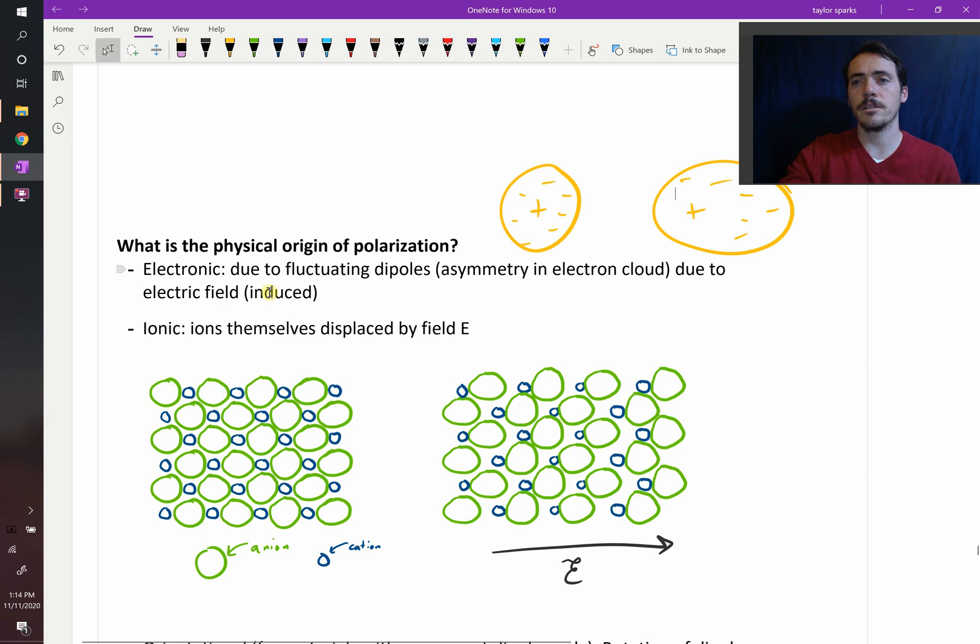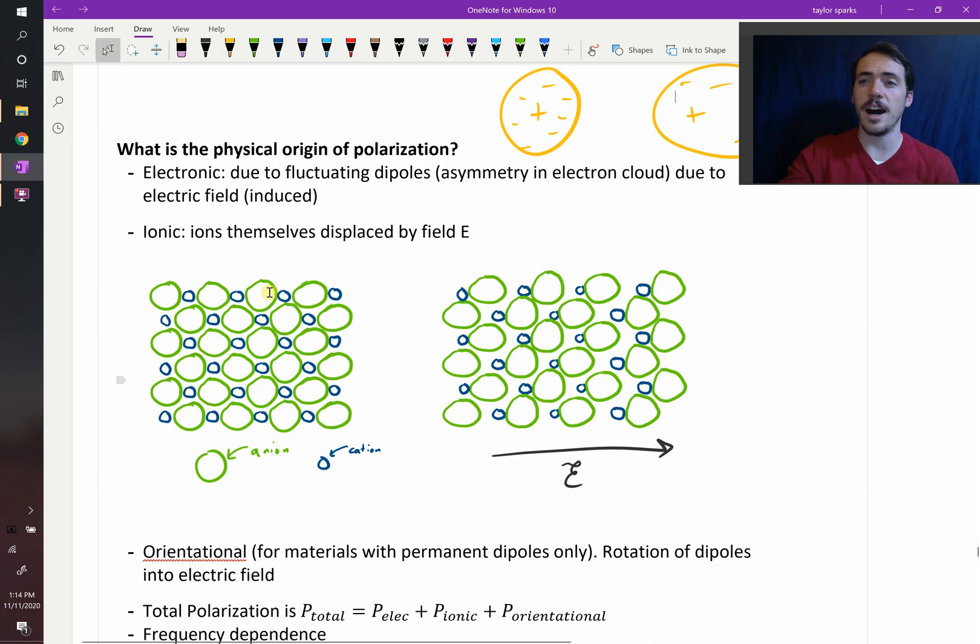Then you can get ionic contribution to polarization. In this case the ions, these atoms that have been charged, so cations and anions, they themselves, because they have a charge, they can move in response to a field. So here on the left I've done my best to show a something like a rock salt structure. So you have this alternating positive negative anion and cation structure.